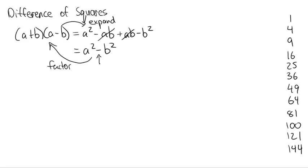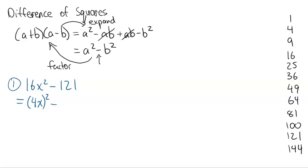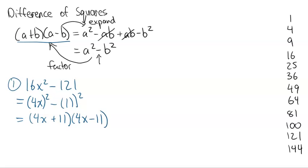Let's look at a couple of examples of the difference of squares. Example one: 16x squared minus 121. We can take the square root of the first term — it's 4x. We can take the square root of the last term — it's 11. I'm going to write it as 4x all squared minus 11 all squared. So the a term is 4x and the b term is 11. Writing it as a plus b times a minus b gives us 4x plus 11 times 4x minus 11, and you're done — completely factored.